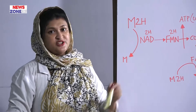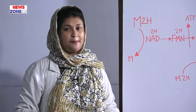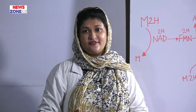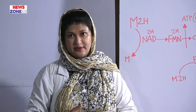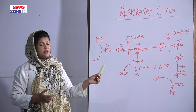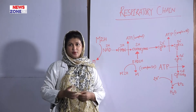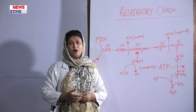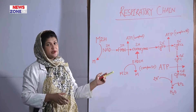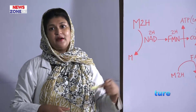If respiratory chain dysfunction occurs, there will be hypoxic cell injury, mitochondrial myopathy, neuropathy, encephalopathy, renal dysfunction, stroke, and epilepsy. The inhibitors of the respiratory chain include amytal, carbarol, or barbiturates, and inhibitors of cytochrome oxidase such as carbon monoxide, hydrogen cyanide, hydrogen sulfide, and cyanide. These inhibitors can inhibit the respiratory chain and cause many diseases in the body.